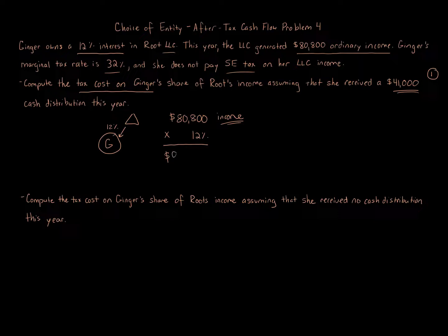$9,696. Okay, we're not done—that's not the tax portion. Now we need to use Ginger's marginal rate, which is 32%. So we take $9,696, let me actually do it over here.